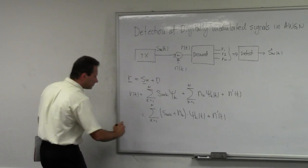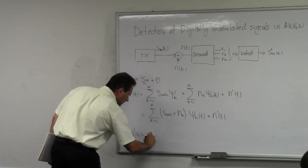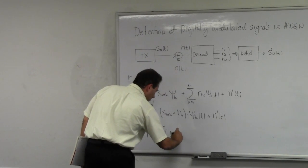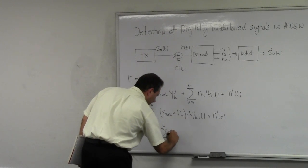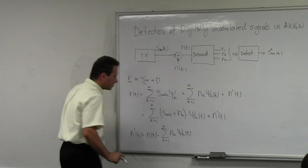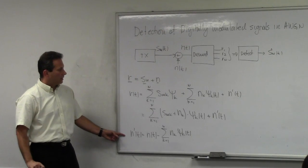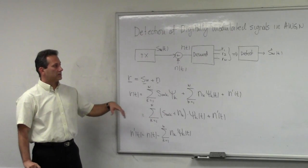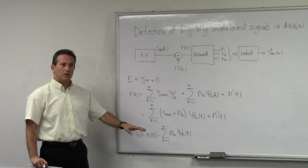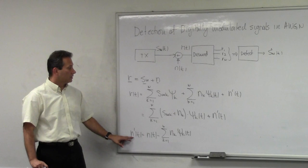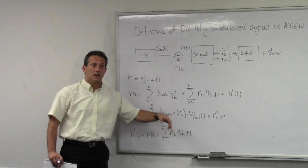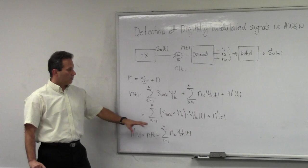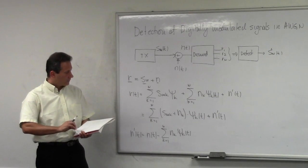This N'(t) is N(t) minus the sum over K of Nₖ·ψₖ(t) — this is the portion of the noise that exists in directions other than the ones spanned by your basis signals. If you think about modulating with cosine, this is the component along the sine direction. N'(t) is orthogonal to the space spanned by ψₖ, and it can be shown relatively easily that it bears no influence on the decision-making process. Therefore we're going to neglect the effects of N'(t).